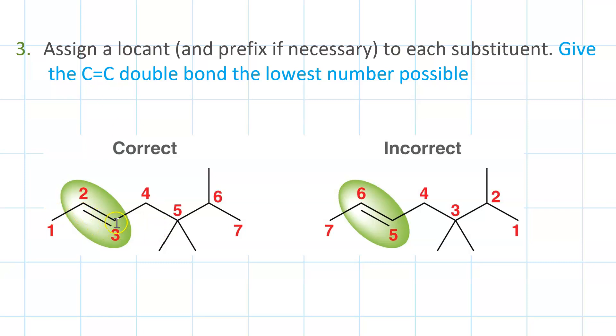So here, we number from left to right to give the C=C double bond the locant two. Whereas over here, we did it wrong trying to get the methyls having lower locants, right?